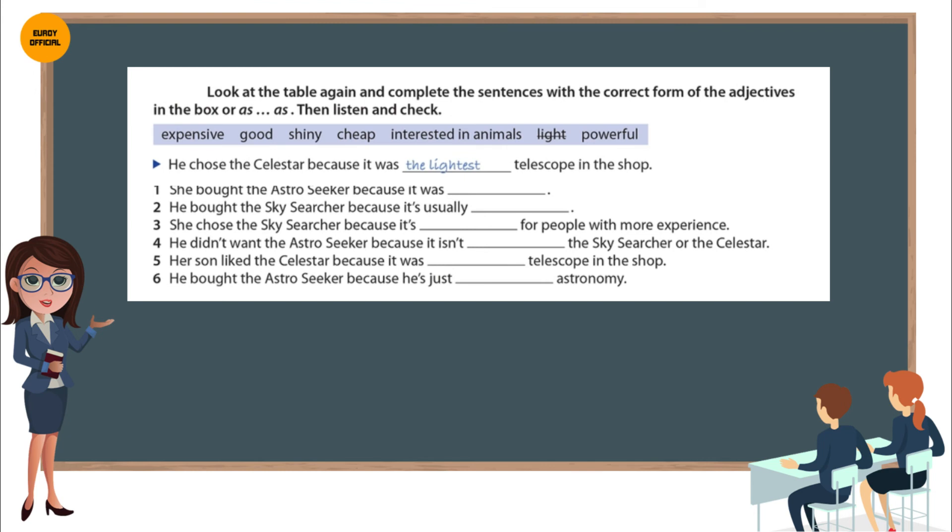I chose the Celestar because at two and a half kilos, it was the lightest telescope in the shop. I had to buy the AstroSeeker, really. It was only 65 pounds. You can't get a cheaper telescope than that these days. I bought the SkySearcher. I was very pleased to find it at this price. It's usually more expensive. I chose the SkySearcher because it's better for people with more experience, like me.